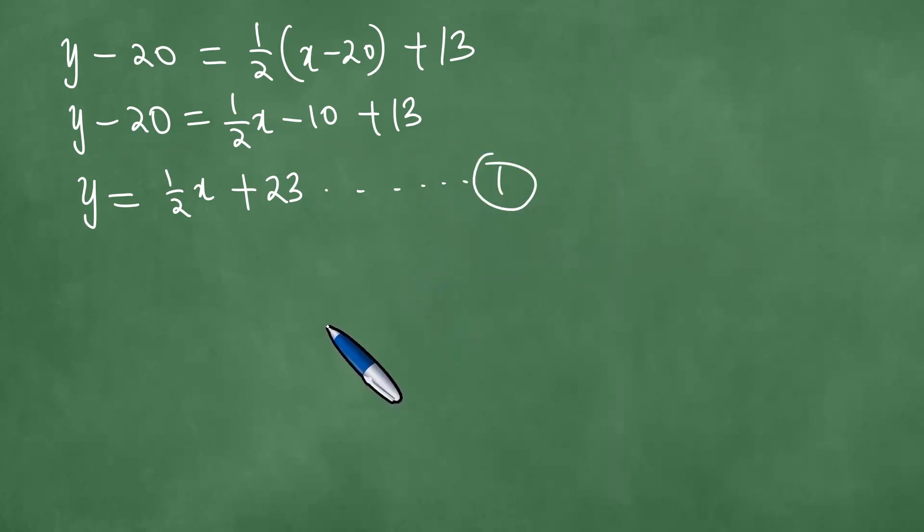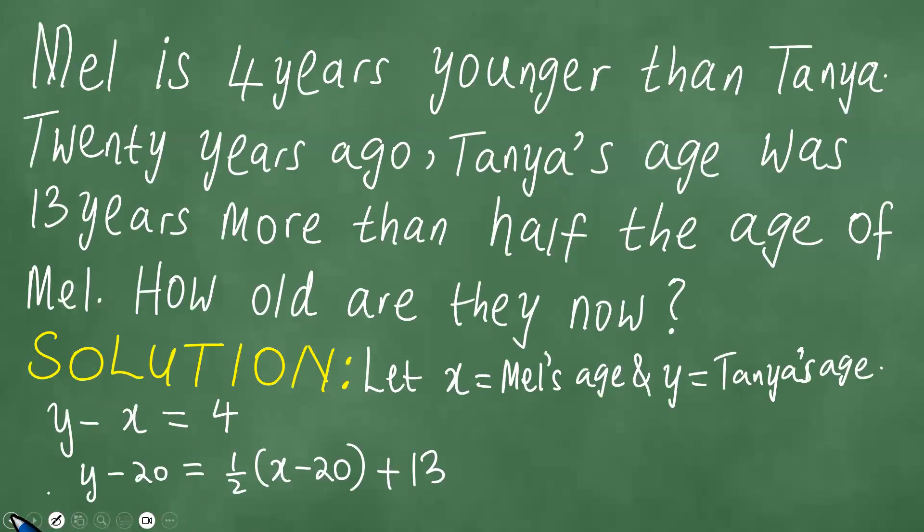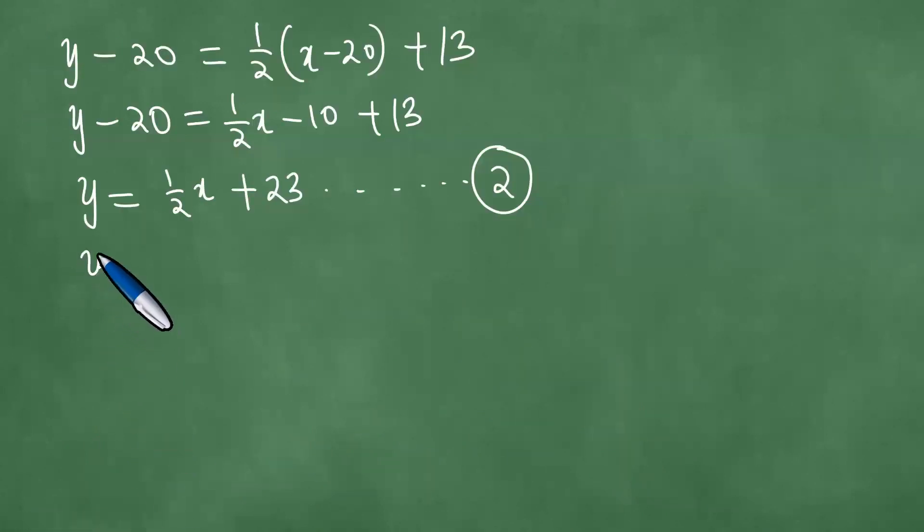Let's call this equation two. We remember that we have another equation. Let's call it equation one: Y - X = 4.